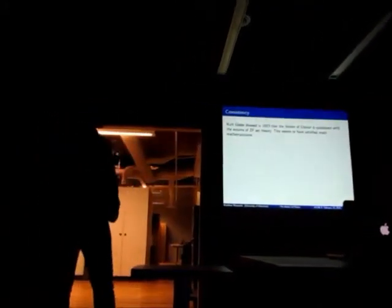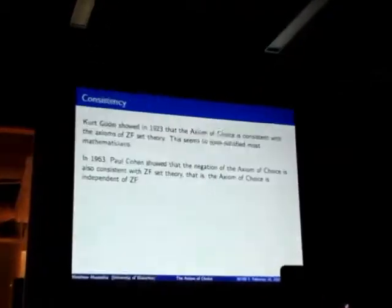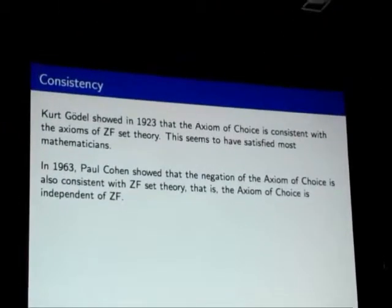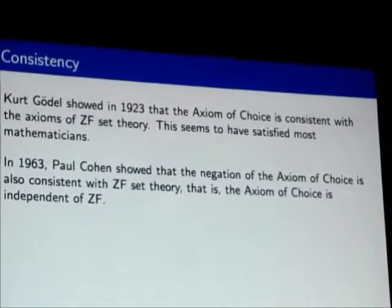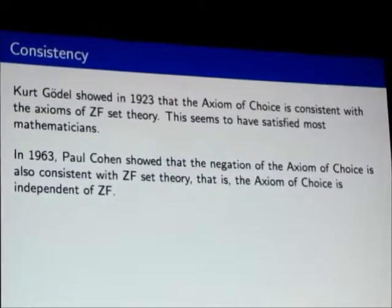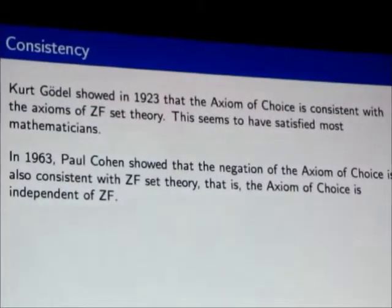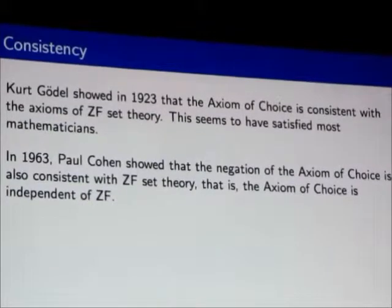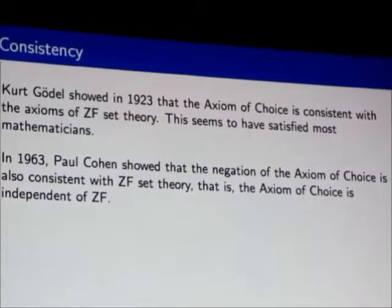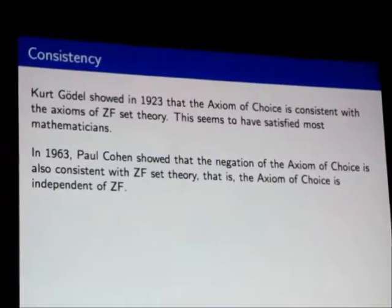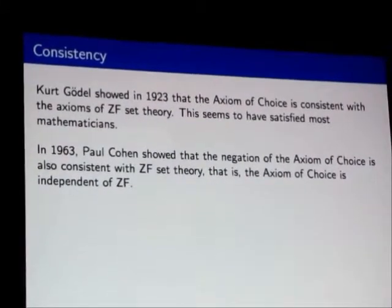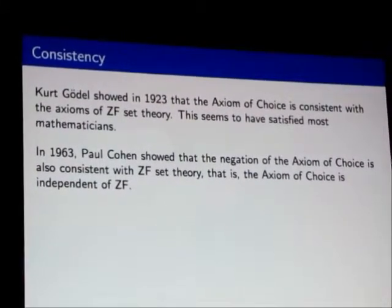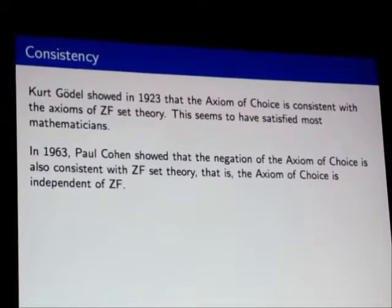People were hoping to show that you had some weird paradox if you allowed it. And 19 years later, Kurt Gödel proved that it's consistent with the other axioms. It's at least not contradictory. This seems to have satisfied most mathematicians, but by this time, the proponents of the axiom of choice had pretty much won. People like David Hilbert, who were huge fans of Cantor and Zermelo and Fraenkel, said things like, we will never be expelled from the paradise that Cantor has created for us.